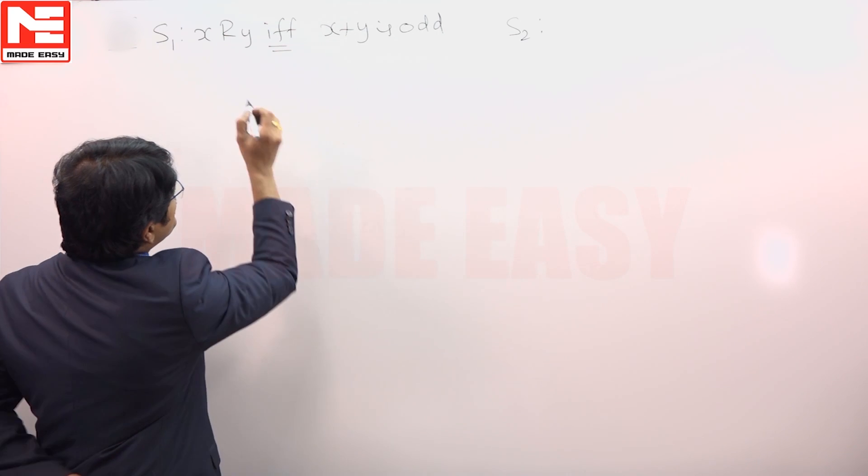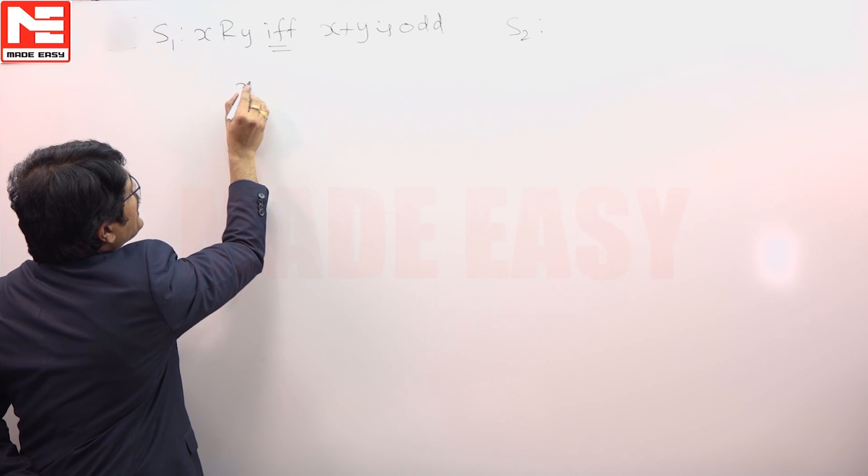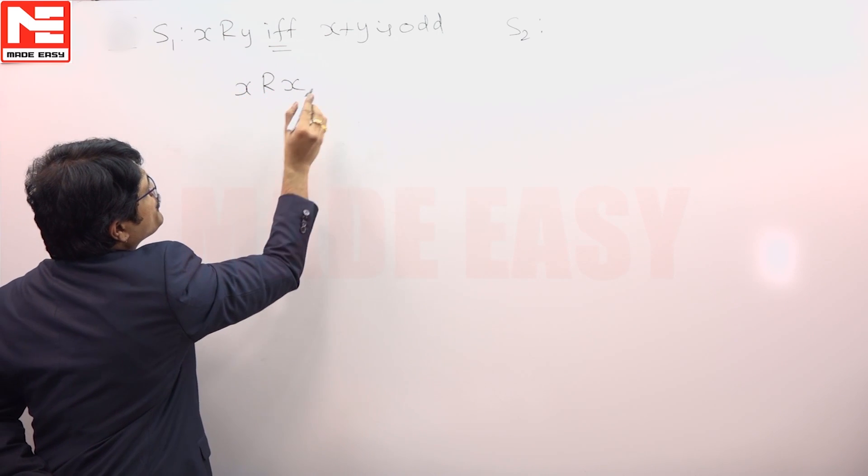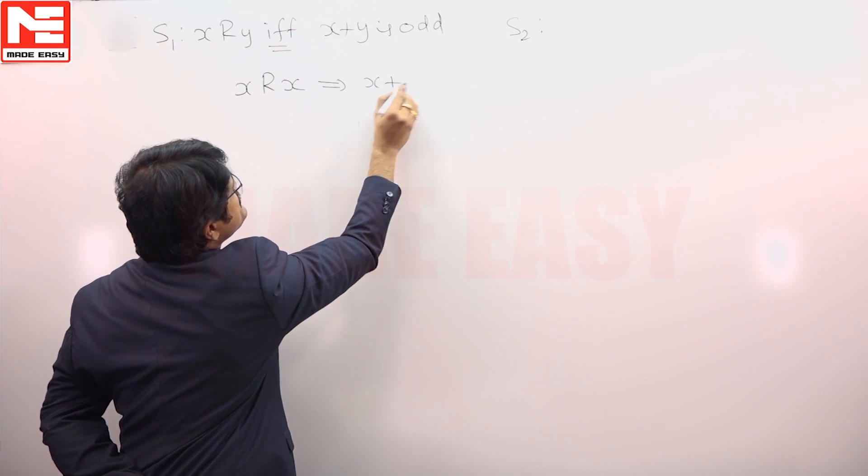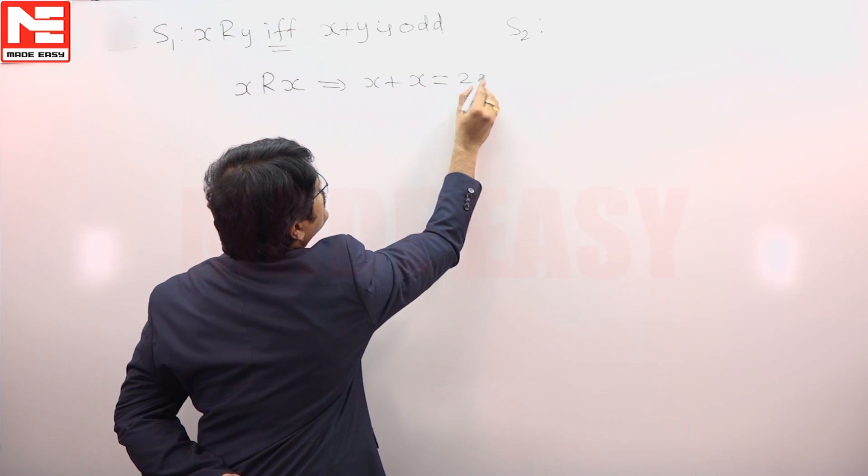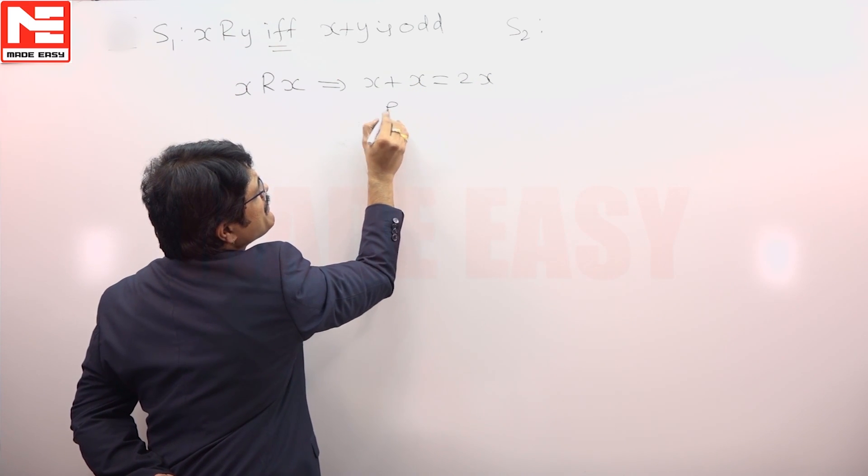Now, if you observe this particular thing, if I consider x related to x for reflexive property, this means x plus x must be odd, which is wrong. This is even.